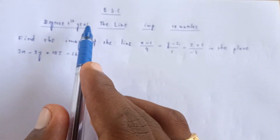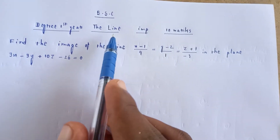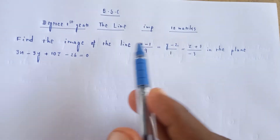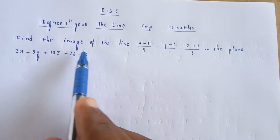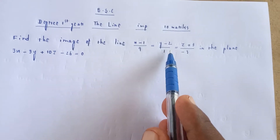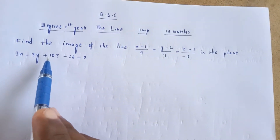Welcome to my channel. BSC — the line, important 10-mark problem: find the image of the line and the line and plane equation.